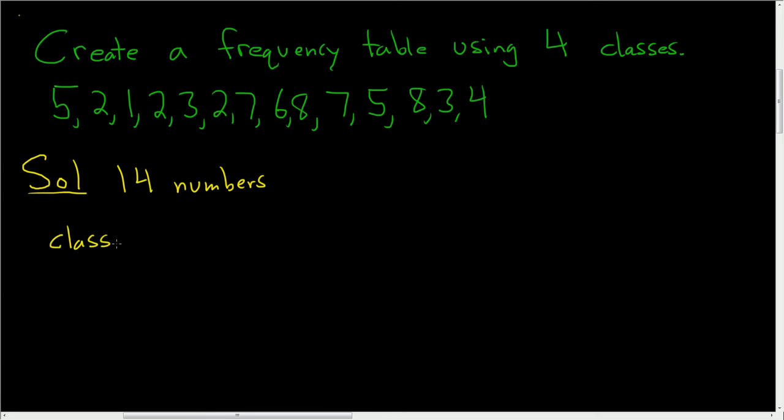So the formula for the class width, the class width is equal to the max, that's the biggest number, minus the min, that's the smallest number, and then you have to divide by the number of classes. And in this formula you always round up no matter what. You always round up to the same number of decimal places as the data. So here we have no decimal places, so we round up to the next whole number.